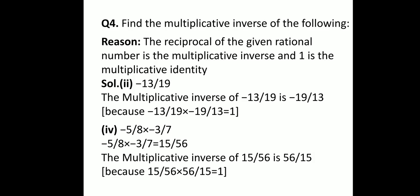Now let us take the fourth part: minus 5 over 8 multiplied by minus 3 over 7. To find out the multiplicative inverse of these two numbers, I need to multiply them first. After multiplying, I get 15 over 56. So the multiplicative inverse of 15 over 56 is the reciprocal of this rational number, which will be 56 over 15. This is because 15 over 56 multiplied by 56 over 15 gives you 1.